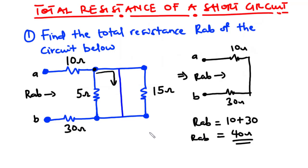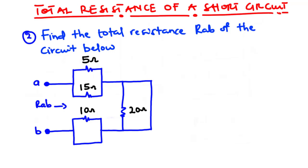For the second example, we find the total resistance Rab of a circuit with four resistors: 5-ohm, 15-ohm, 10-ohm, and 20-ohm. Using the loop approach: the 20-ohm resistor is short-circuited because we can go through its loop without passing through any other circuit element. Similarly, the 10-ohm resistor is short-circuited because we can traverse its loop without encountering any other element. So both the 10-ohm and 20-ohm resistors have been short-circuited, and we are left with the 5-ohm and 15-ohm resistors.